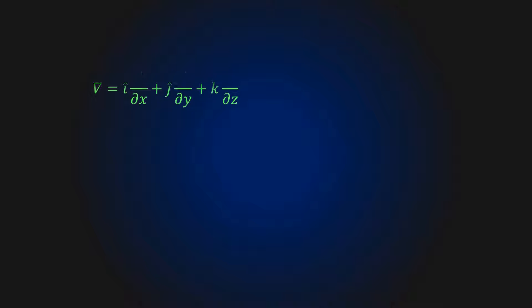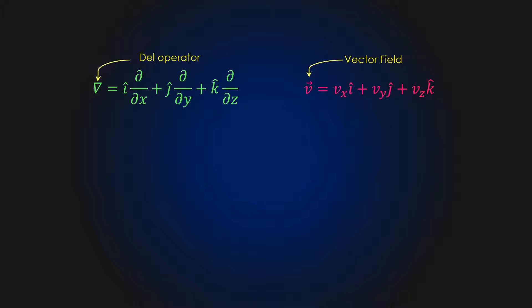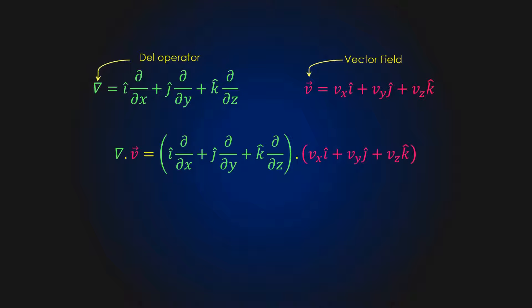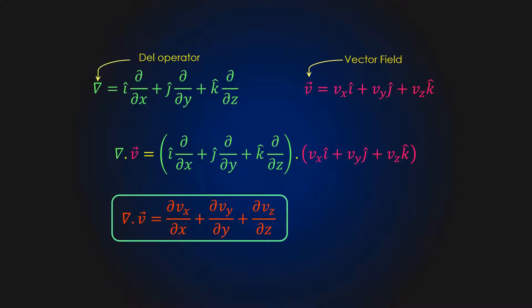Mathematically the divergence is represented by the symbol del. If we take a vector field V represented as Vx i-cap plus Vy j-cap plus Vz k-cap, then the divergence of the vector field is written as shown here. Finally we get an expression which is a scalar quantity. Using some examples, let's understand what this scalar quantity indicates.